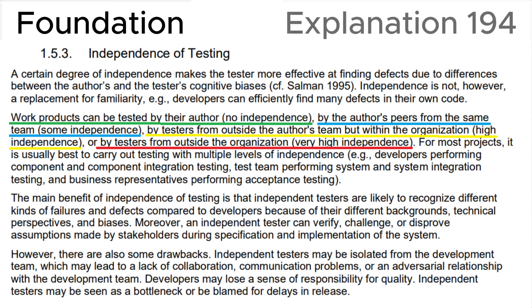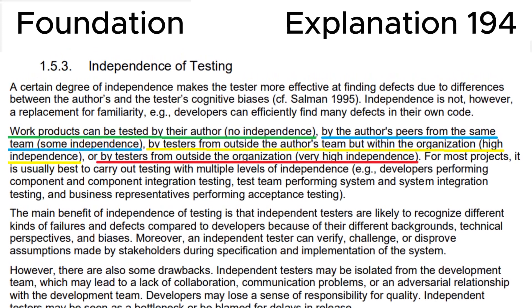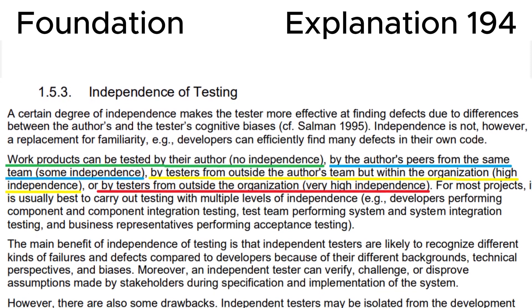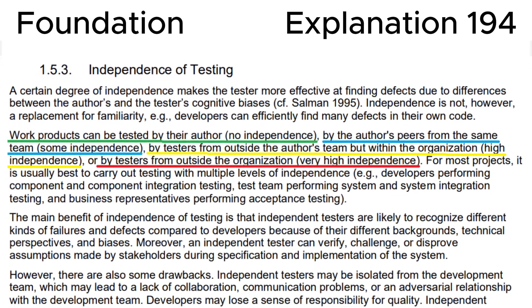Finally, let's look at section 1.5.3 — Independence of Testing — in the ISTQB syllabus, where we can see that work products can be tested by their author (no independence), by the author's peers from the same team (some independence), by testers from outside the author's team but within the organization (high independence), or by testers from outside the organization (very high independence).